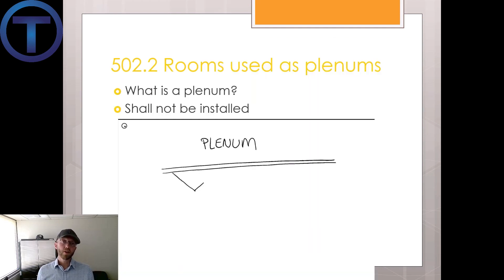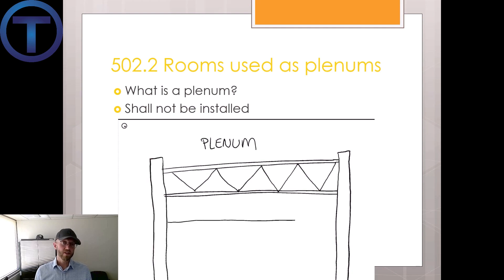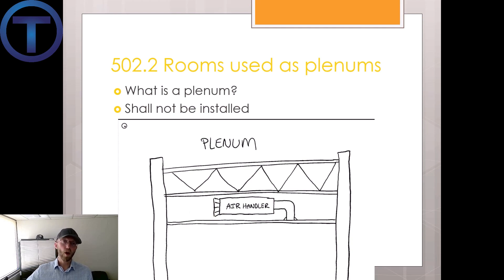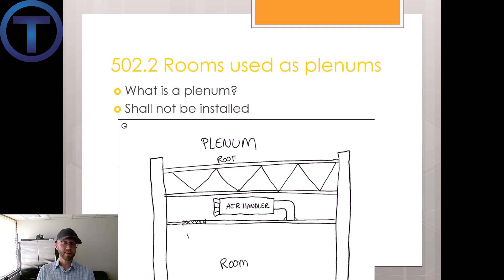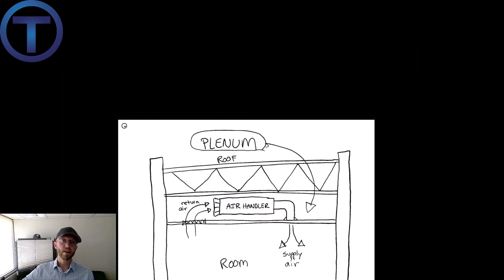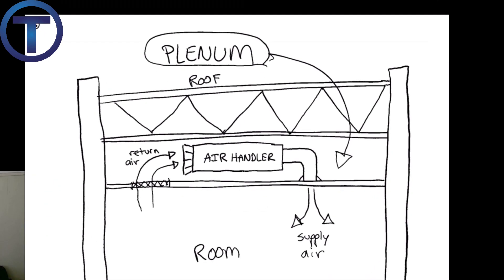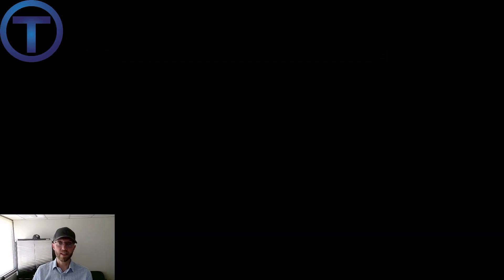Section 502.2 states that water heaters shall not be installed in rooms used as a plenum. A plenum is an air return — if that space is being used to draw air back to an air handler or furnace, that's a plenum and we shouldn't be installing a gas appliance in there. Specifically, the movement of air could draw natural gas or exhaust fumes into the building space instead of exhausting them out or keeping them in a safe place.